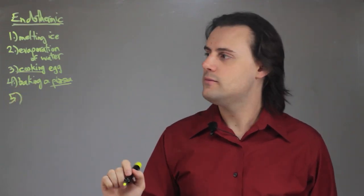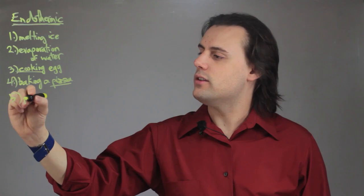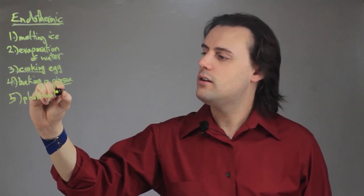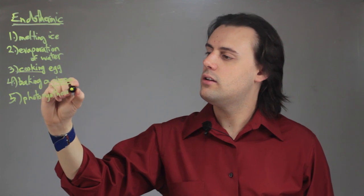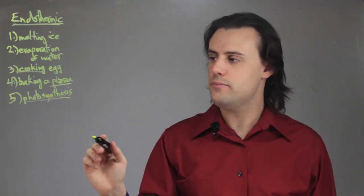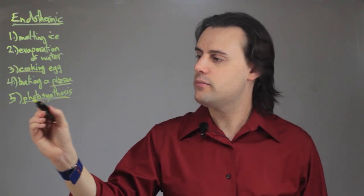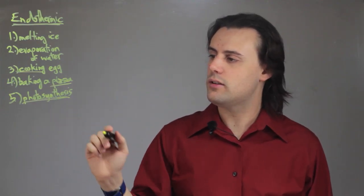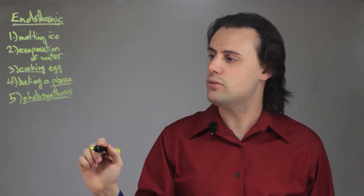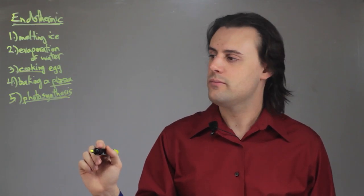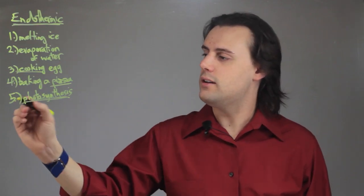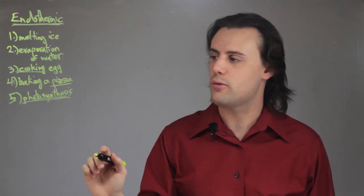A fifth example would be photosynthesis, which occurs in plants, in which radiation from the sun combined with sugar will induce reactions inside the plant, and allow it to produce oxygen, while it uses CO2. This is known as an endothermic reaction.